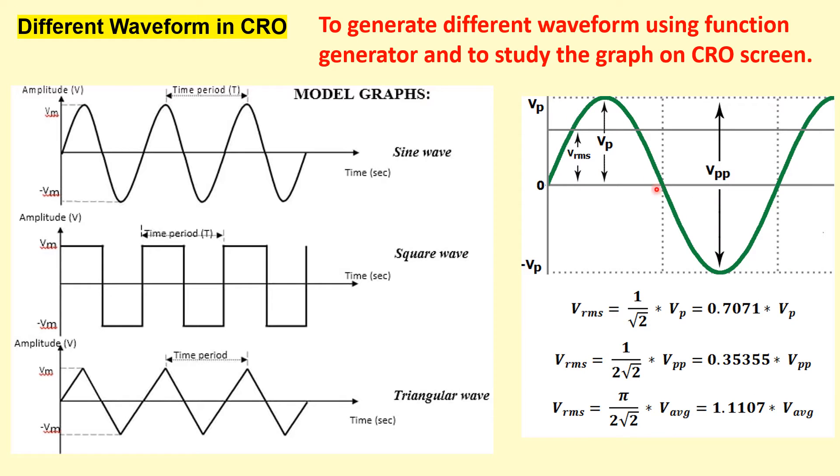In this sine wave, on the x-axis there is time and y-axis there is voltage. The amplitude is known as the peak voltage Vp. And from top to bottom, this is known as V peak to peak or Vpp. And the RMS voltage can be related with this peak voltage as Vp divided by under root 2 or 0.707 of Vp gives us the VRMS value.